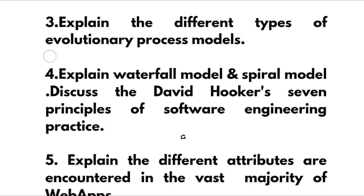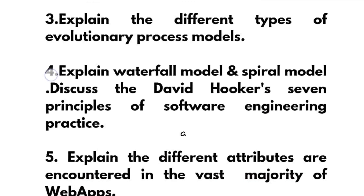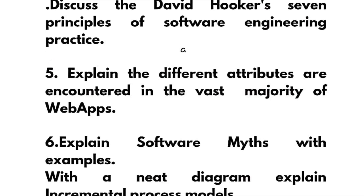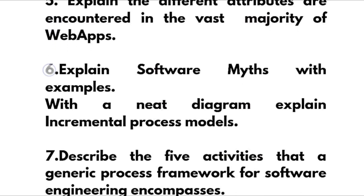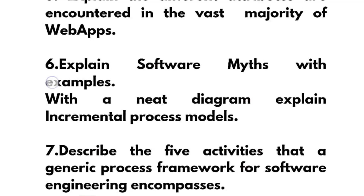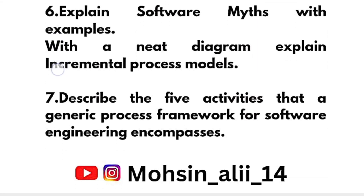Next, explain the waterfall model and spiral model, or sometimes differentiate between these two models. Explain David Hooker's 7 principles of software engineering practice, and explain the different attributes encountered in the vast majority of web apps. The last two questions are: explain software myths with examples, and explain incremental process models with a diagram. Describe the five activities of the generic process framework for software engineering. These are the seven super important questions from Module 1 — you should surely go through all of them.